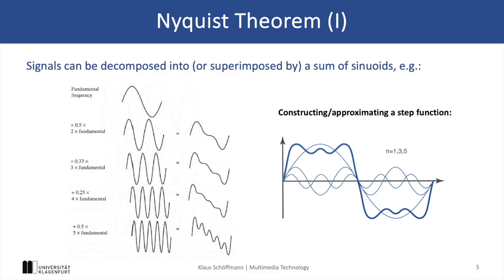We have a fundamental frequency component at the top and then we have twice the frequency, three times the frequency and so on with different factors. And we combine all these components into one combined signal, which we can see on the right, and we end up with an approximated step function or rectangular function.